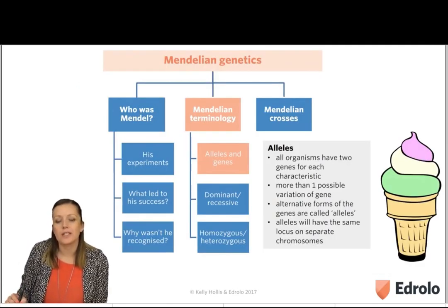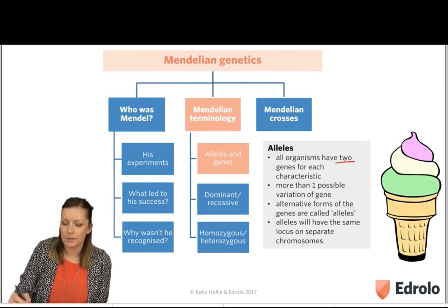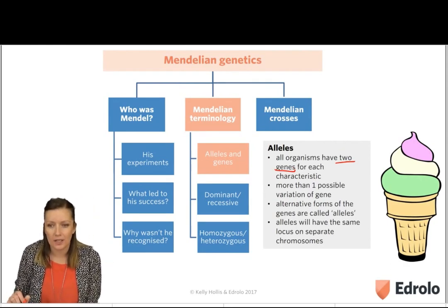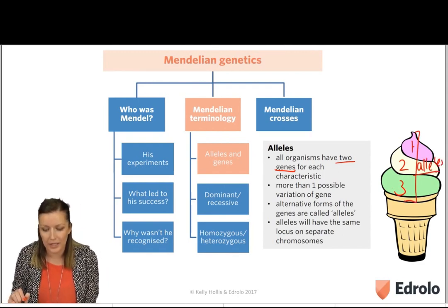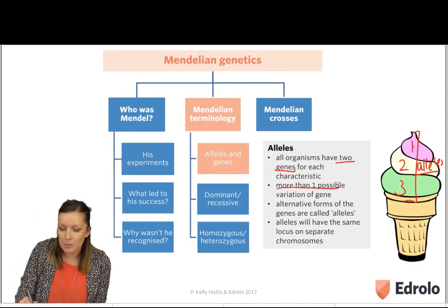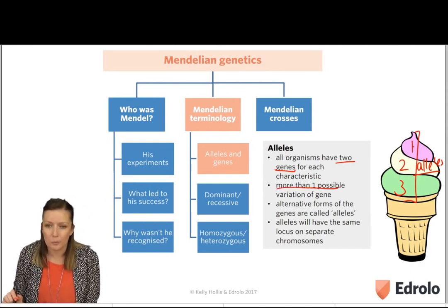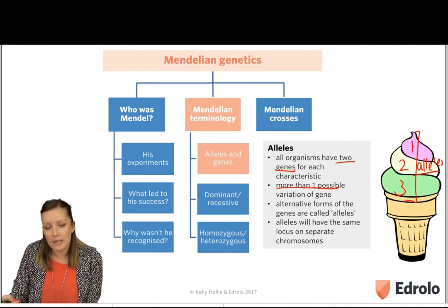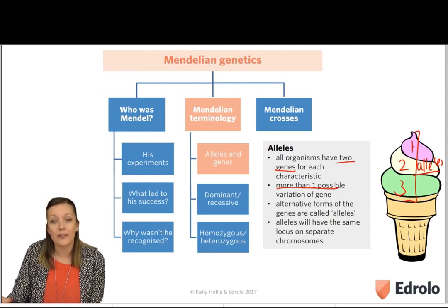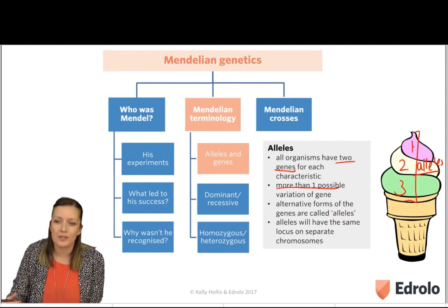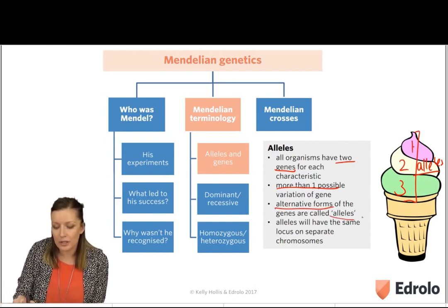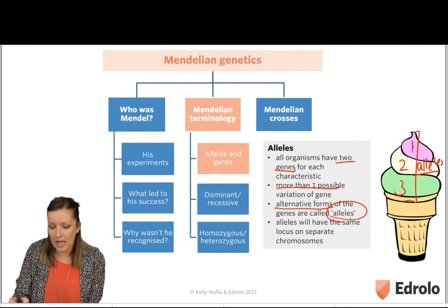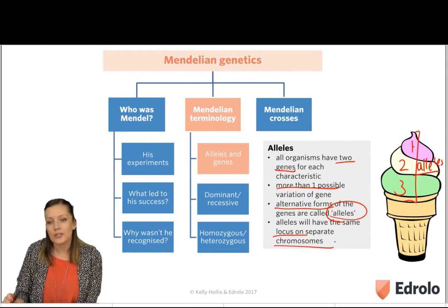A term that goes hand in hand with genes is the term alleles. All organisms have two genes for each characteristic. We can see in our ice cream example there are actually three different flavors, so we could say there are three different alleles for ice cream — because there's more than one variation of a gene available. Sometimes there are only two, but more often than not there are more than two different variations. We'll be looking at simple characteristics that only have two different alleles available. These alternative forms of the genes are called alleles, and they will have the same locus on the separate chromosomes, just like our genes.